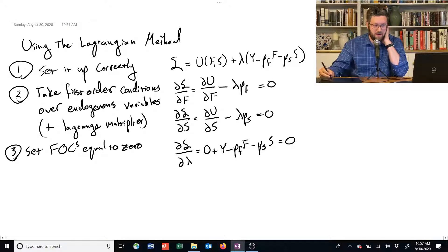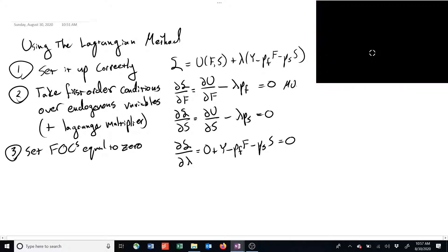Notice that this does imply that the marginal utility of food, which is the partial derivative of U with respect to F, is equal to that. This one implies the marginal utility of shelter is equal to lambda times PS.